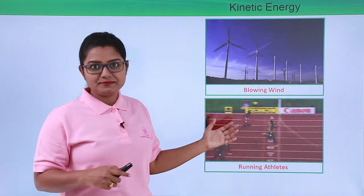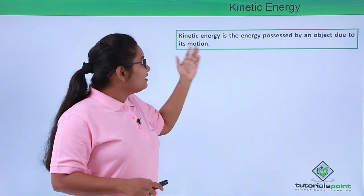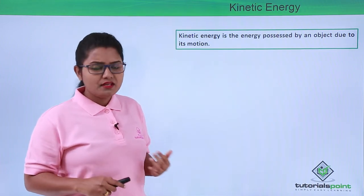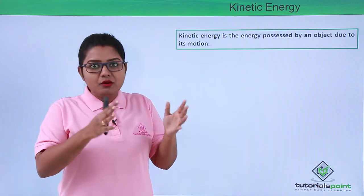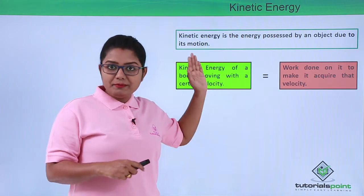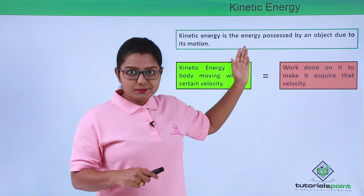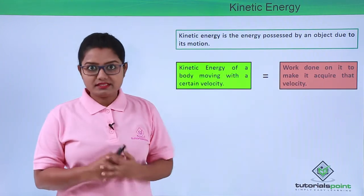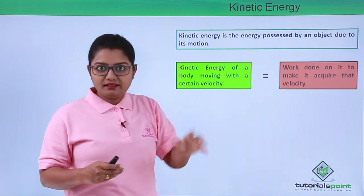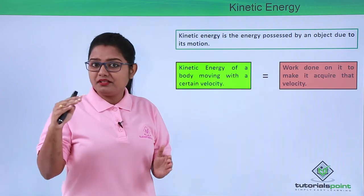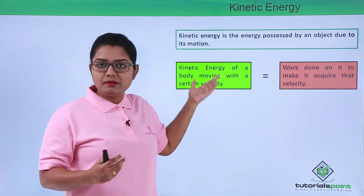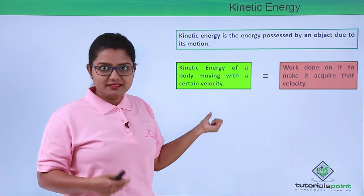We define kinetic energy as the energy possessed by an object due to its motion, or by virtue of its motion. The kinetic energy of a moving body will be exactly equal to the work that has been done on the body to make it acquire that velocity. So when a body has to acquire a particular velocity, a certain amount of work has to be done on it, and that amount of work done will be equal to the kinetic energy it possesses while moving at that velocity.